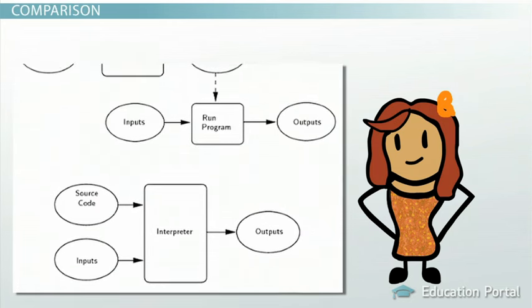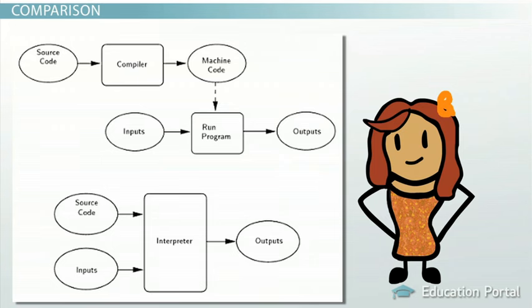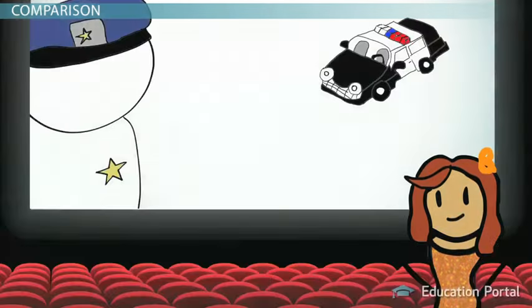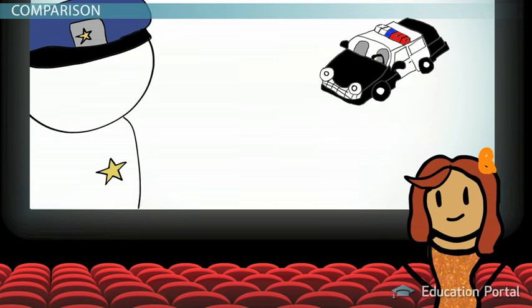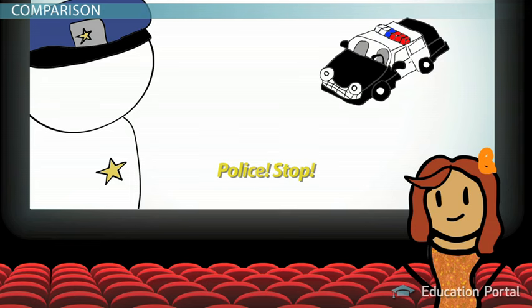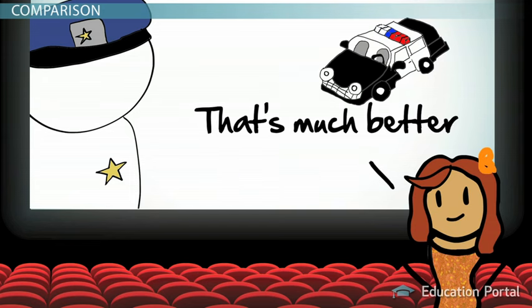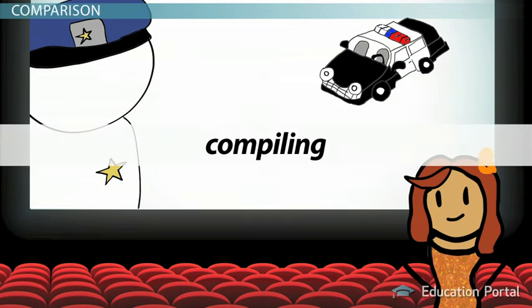To understand the difference between compiling and interpreting, let's examine the equivalent in human languages. Consider a movie made in Asia where all the characters speak Vietnamese. To market the movie to an international audience, the spoken text needs to be translated into English. A translator would sit down and carefully translate all the text and create subtitles for the movie. Anytime someone wants to watch the movie, they can turn on the subtitles. This type of translation is the equivalent of compiling — everything is translated once and can be used many times afterwards.